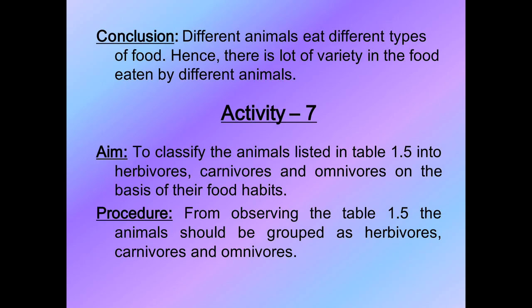So now our observation is complete. The conclusion is that different animals eat different types of food - there are so many varieties of food among animals. Hence we can say there is a lot of variety of food eaten by animals. Earlier we discussed food varieties in humans, and now we have seen that animals also have a lot of food variety.